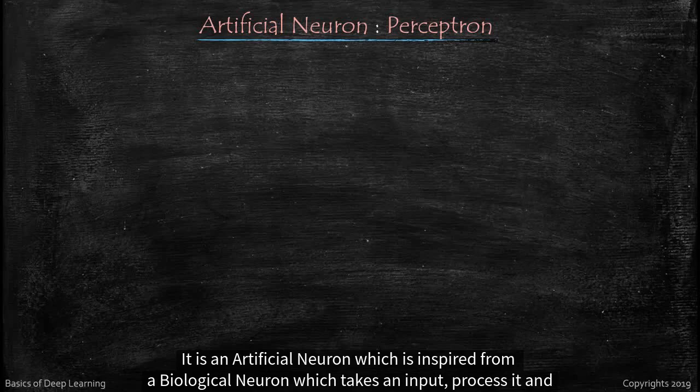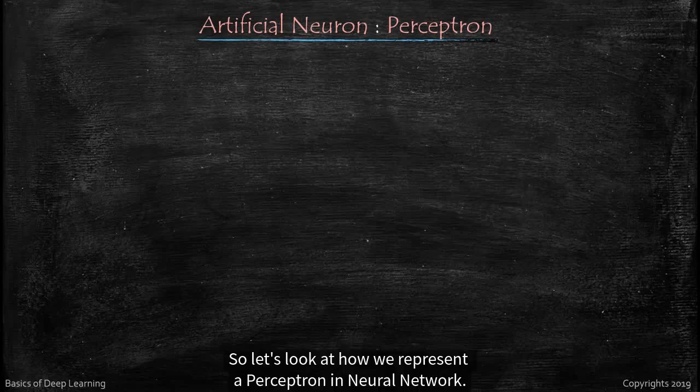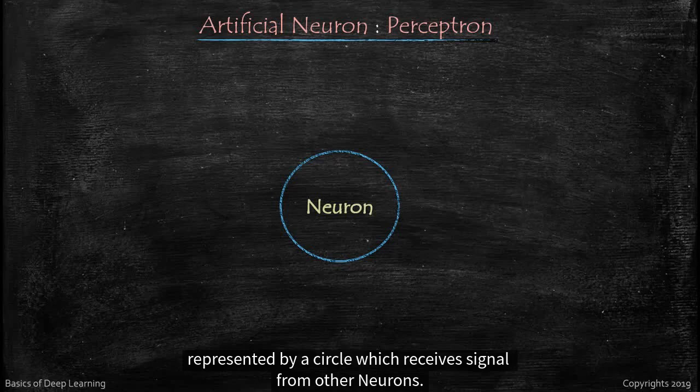It takes an input, processes it, and returns an output. So let's look at how we represent a perceptron in neural network. This is a neuron, especially the nucleus part of it, represented by a circle.